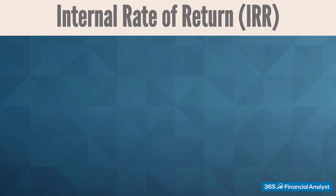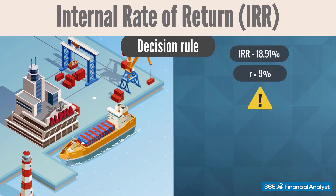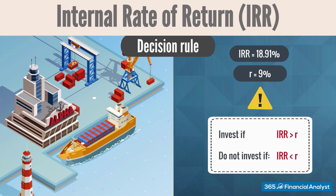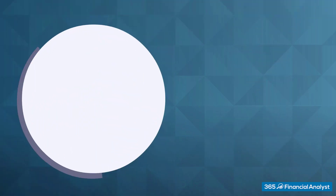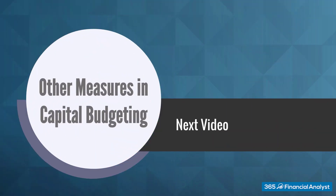All we need to do now is follow the IRR decision rule. Alpha Corporation's required rate of return is 9%, which is lower than the internal rate of return of 18.91% we've just calculated. That's why the investment should be accepted. We're making excellent progress. We are done with NPV and IRR, which are crucial. In our next videos, we'll focus on four other measures used in the capital budgeting process. Thank you for watching.